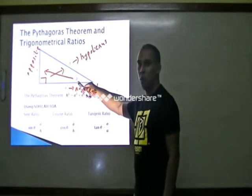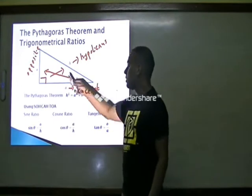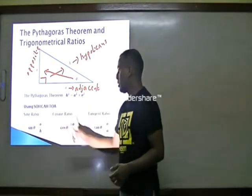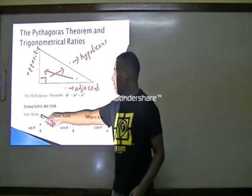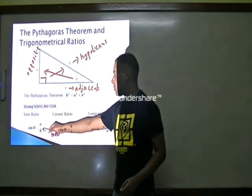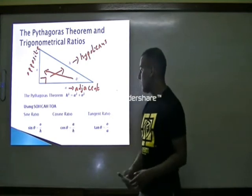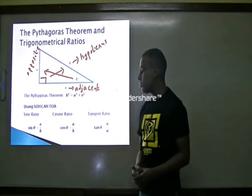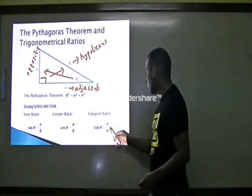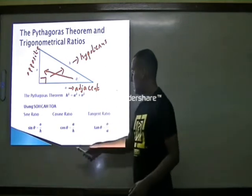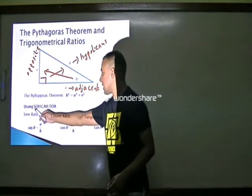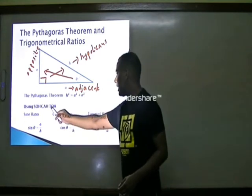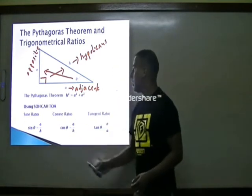Suppose we are working with angle theta and two of the three sides, we are going to use SOHCAHTOA. Sine theta is equal to opposite over hypotenuse. Cosine theta is equal to adjacent over hypotenuse. And tangent theta is equal to opposite over adjacent. So: SOH is sine opposite hypotenuse, CAH is cosine adjacent over hypotenuse, and TOA is tangent opposite over adjacent.